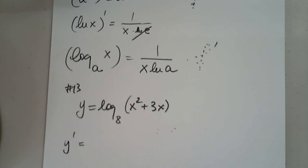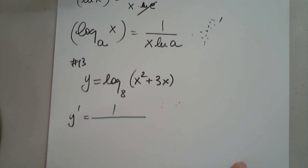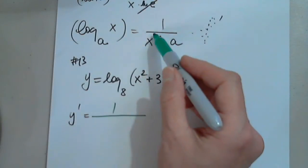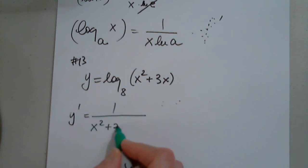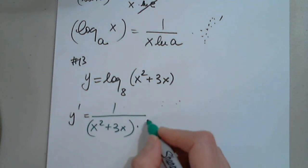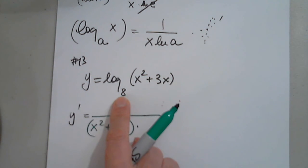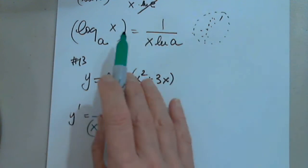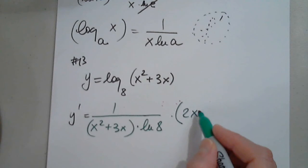How do I differentiate log base 8 of x squared plus 3x? It's 1 divided by x squared plus 3x times natural log 8, and then times the derivative of the inside — don't forget the shadow — which is 2x plus 3. That's it.